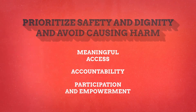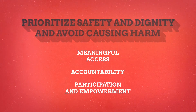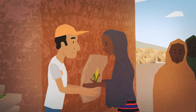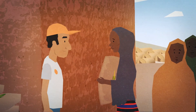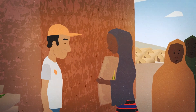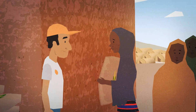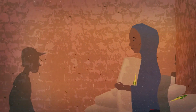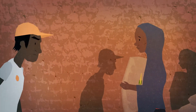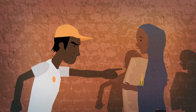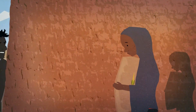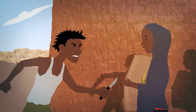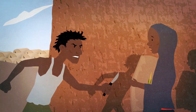1. Prioritise safety and dignity and avoid causing harm. This is about avoiding or at least mitigating the effects of physical and psychological threats faced by affected populations when accessing humanitarian services. These threats can be internal or external.